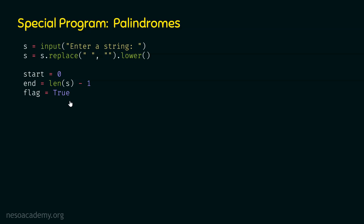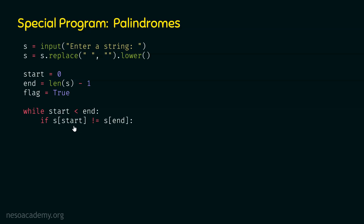Now we need a loop to compare each character of the string. So let's write this while statement: while start less than end. We are comparing start and end; if start is less than end, only then we continue. If start becomes equal to end, it means both are pointing to the same character and no comparison is needed. Now let's check: if s[start] is not equal to s[end], then we set flag to false, meaning the string is not a palindrome. After this, we increment start by one and decrement end by one, so that we can compare the other letters of the string.